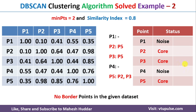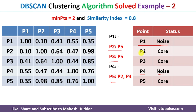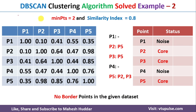We have no border points in this dataset. With respect to each core point, we get one cluster. The first cluster is {P2, P5}, the second cluster is {P3, P5}, and the third cluster is {P2, P3, P5}. In this video, I have discussed how to use the DBSCAN clustering algorithm to find core, noise, and border points, and how to form clusters on a given dataset.